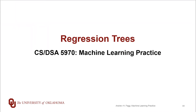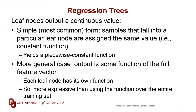So far, we've been talking about trees that are involved in classification — either crisp classification or probabilistic classification — but there is a whole other class of trees called regression trees that allow us to output not a class, but some sort of continuous value. The most common form of a regression tree is one that outputs a constant value for any sample that falls into a particular leaf, giving us a piecewise constant function defined over the feature space.